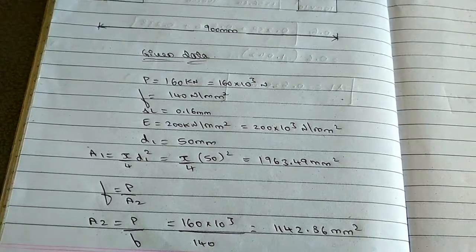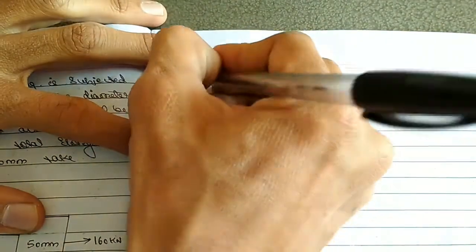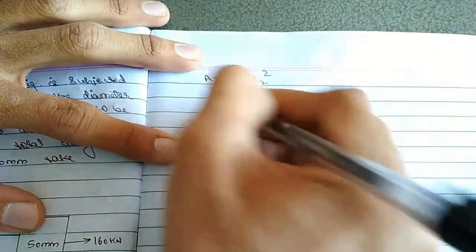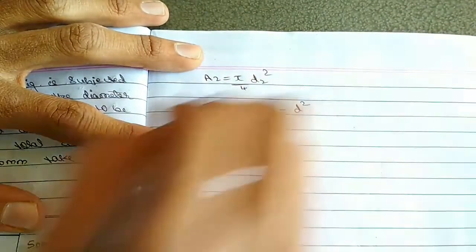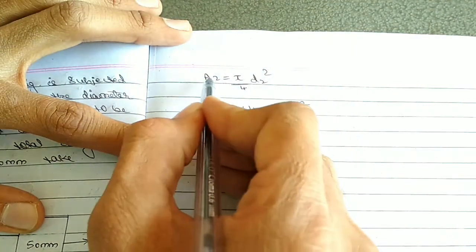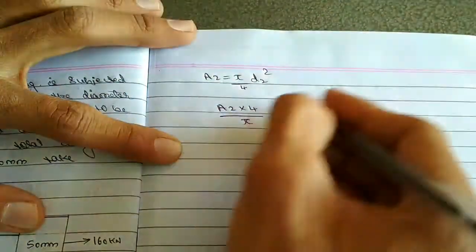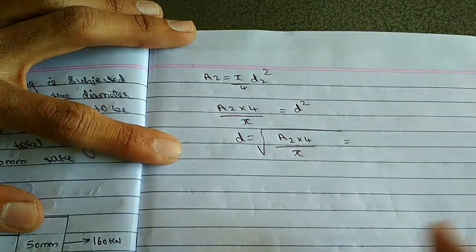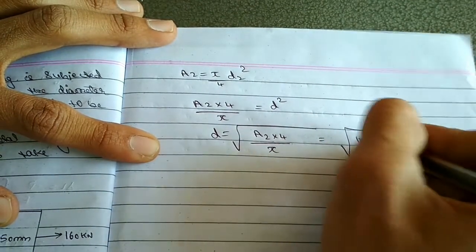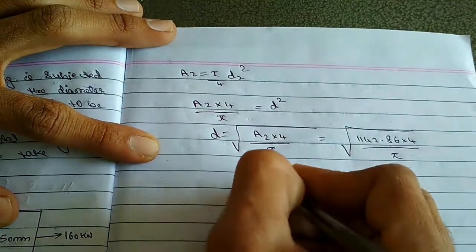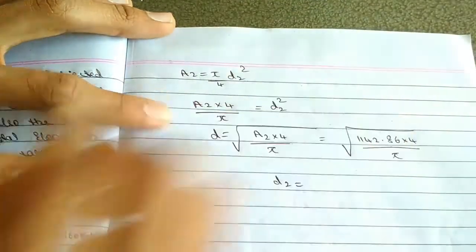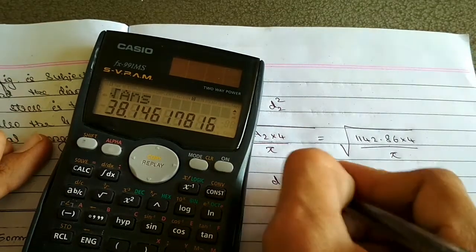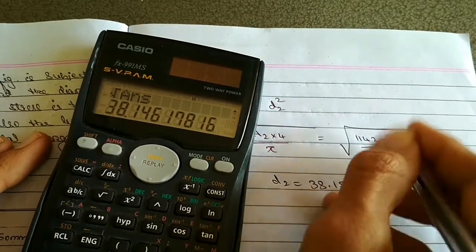Now we have to find D2. Since A2 = (π/4) × D2², we get D2² = (A2 × 4) / π, so D2 = √((A2 × 4) / π) = √((1142.86 × 4) / π) = 38.15 mm. So we have found out D2.